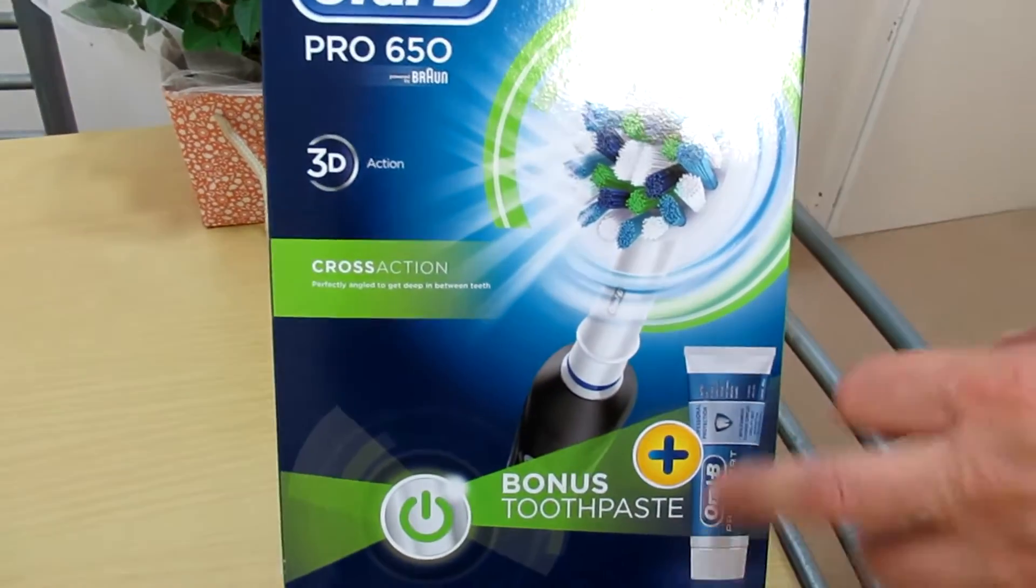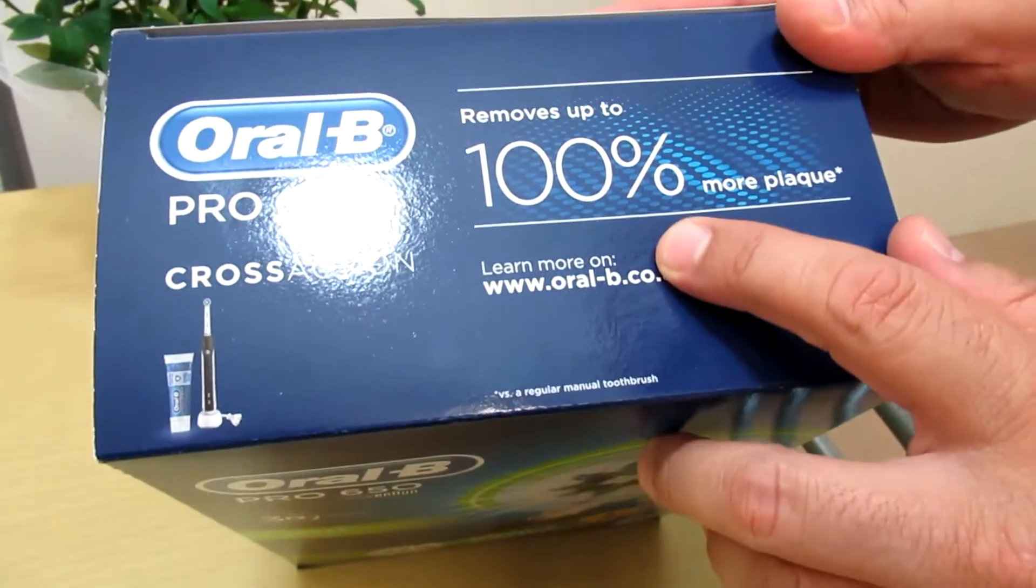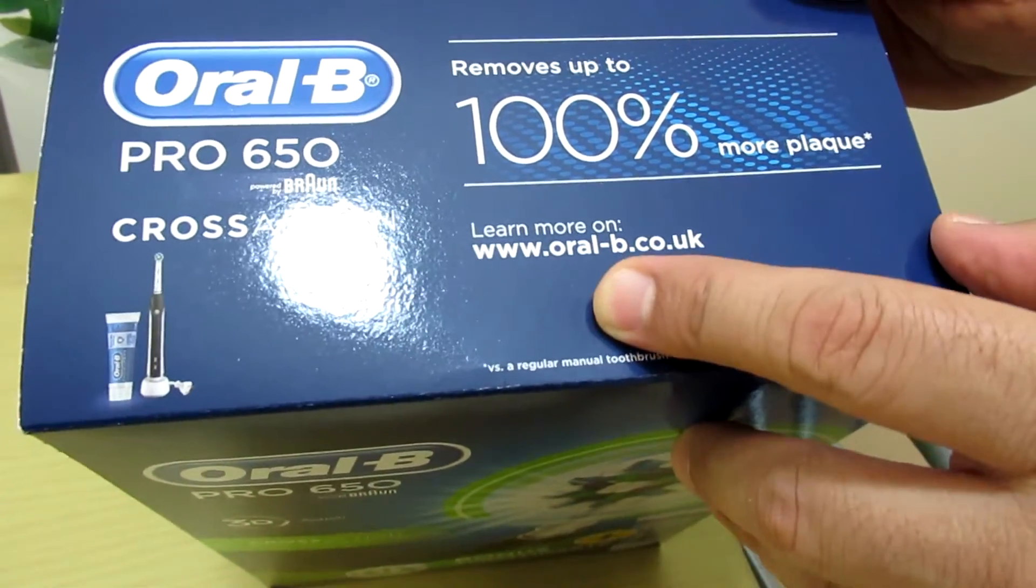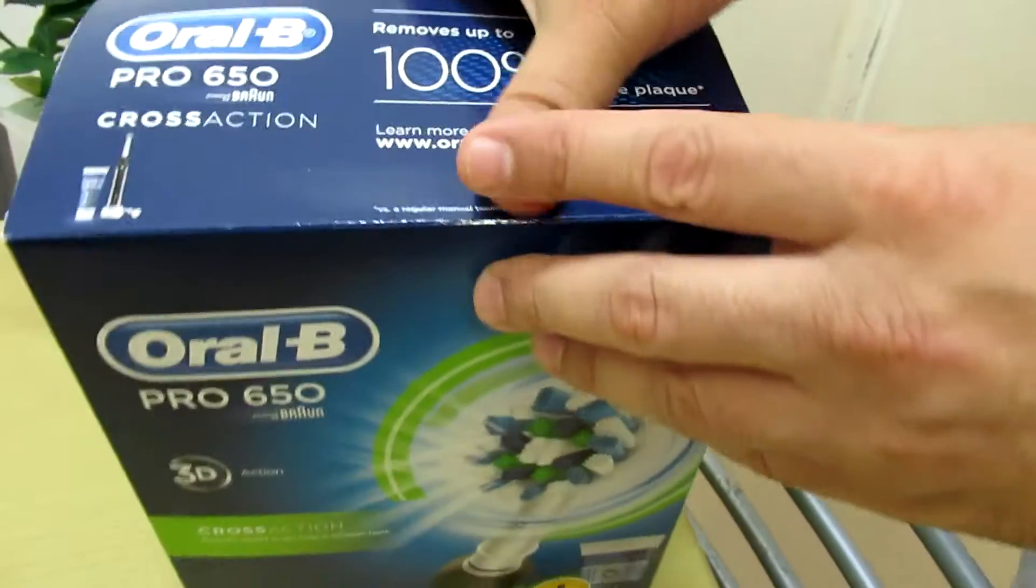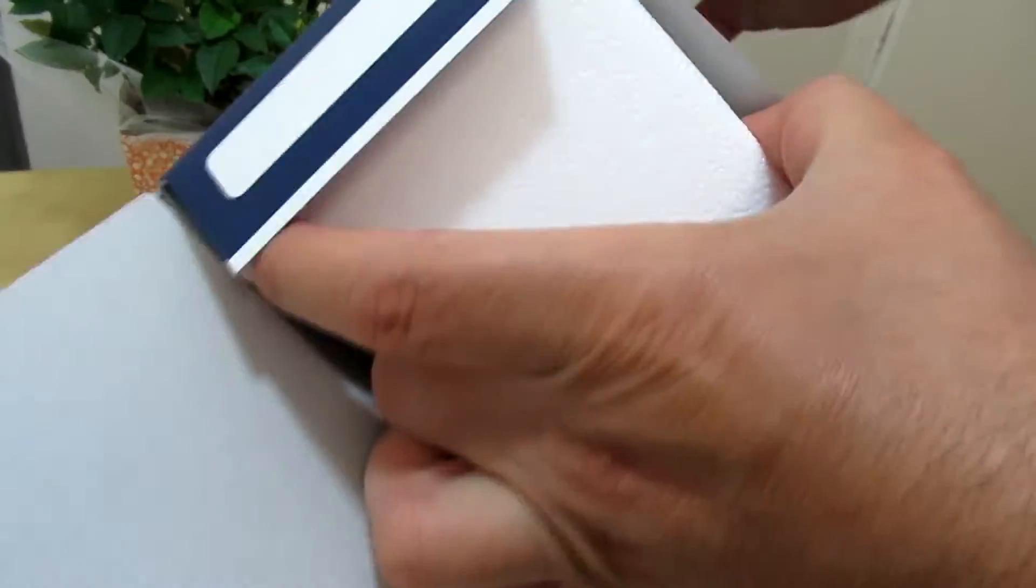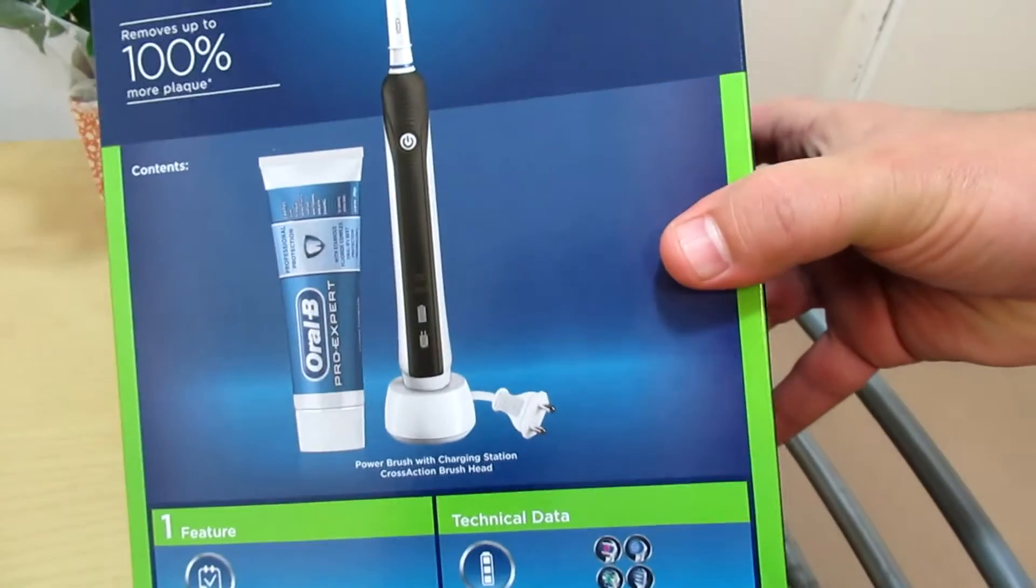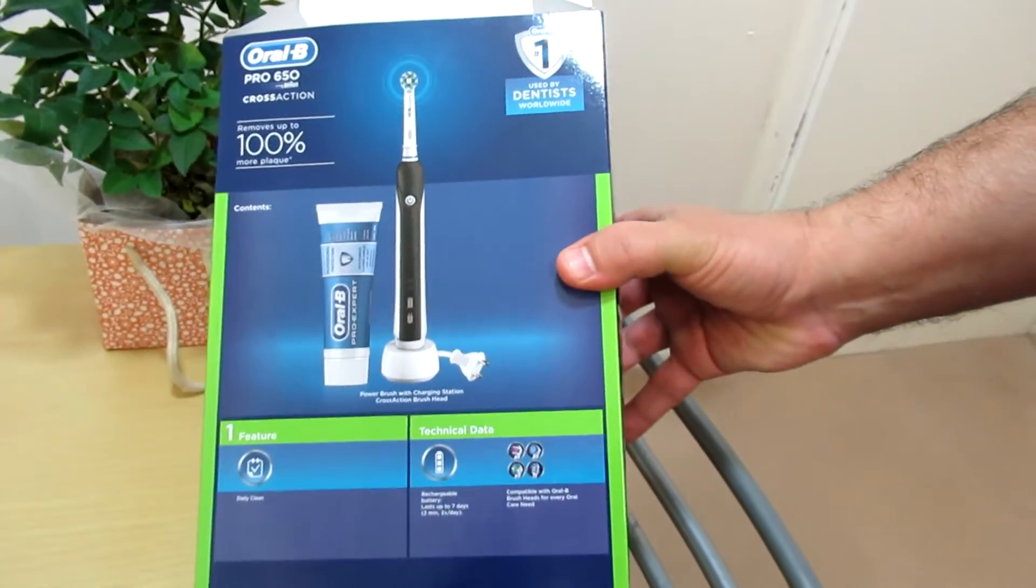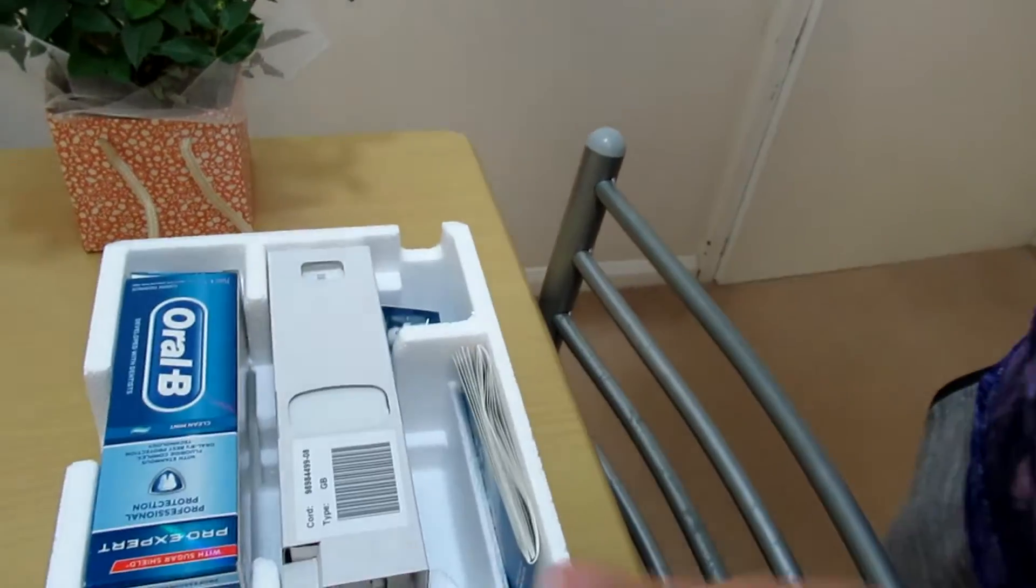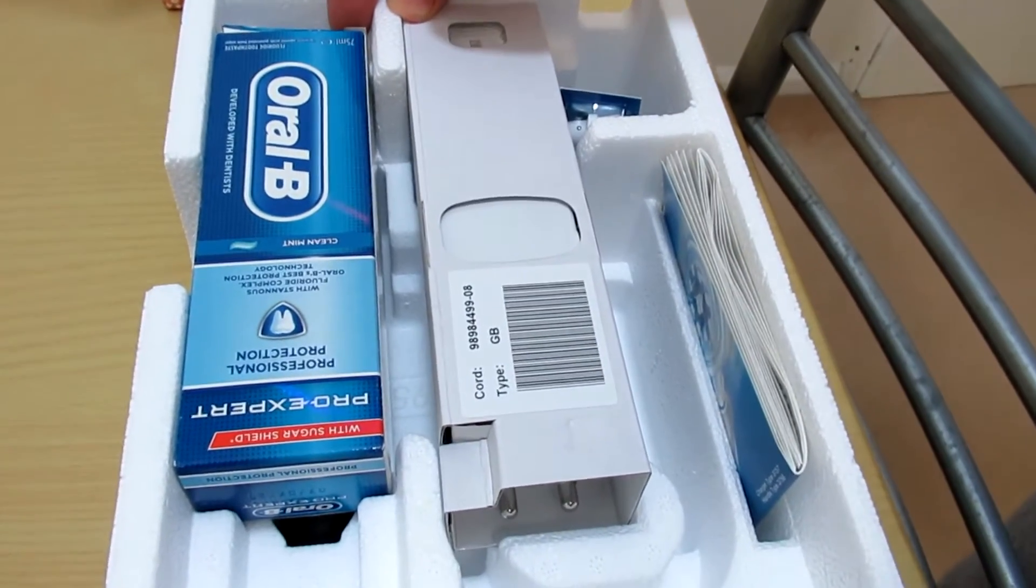And this is the toothpaste and this is the toothbrush. It removes up to 100% more plaque. You can learn more on oral-b.co.uk. So I will be unpacking the product. This is the toothbrush, chargeable, and this is the toothpaste, one toothpaste from Oral B included for free with the electric toothbrush.